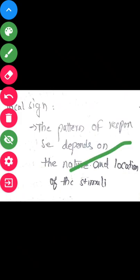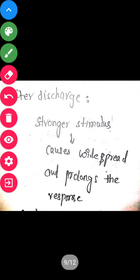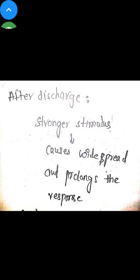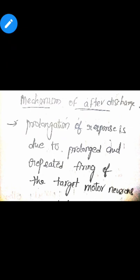Next is after discharge. When there is a stronger stimulus, it causes widespread and prolonged response. The prolongation of response is due to prolonged and repetitive firing of the target motor neurons. There are two mechanisms for why there is prolongation or repetitive firing of target neurons.